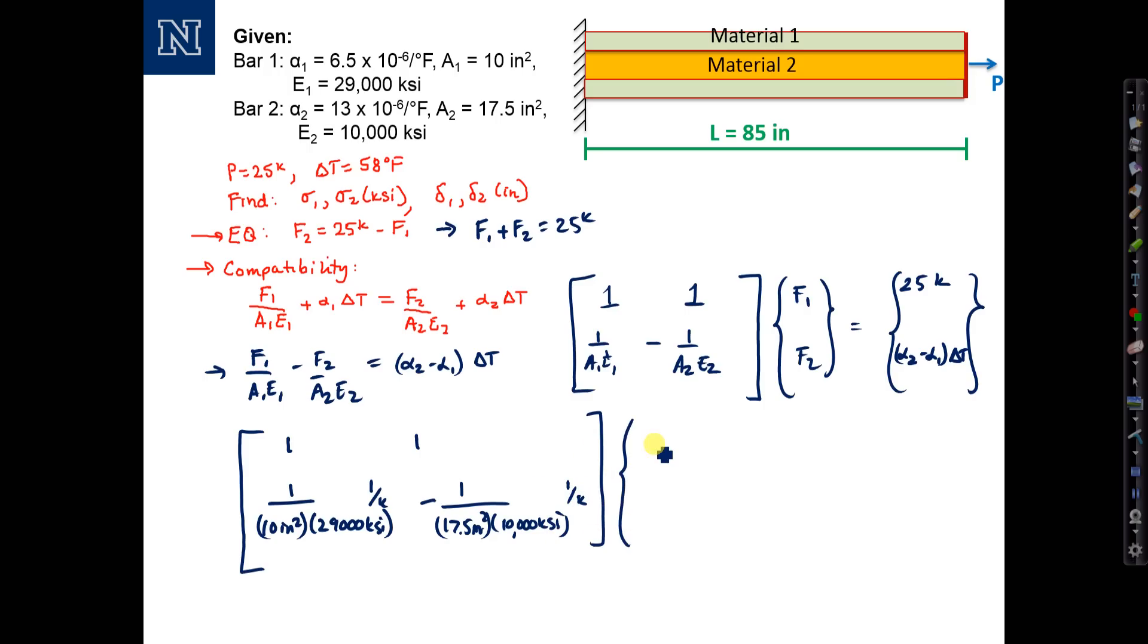times F1, F2 equals 25 kips. And the bottom one: the term (alpha2 minus alpha1) is going to be 13 minus 6.5 times 10^-6 per degree Fahrenheit times 58 degrees Fahrenheit. So this number is unitless, which means both our forces, when we solve for the forces,